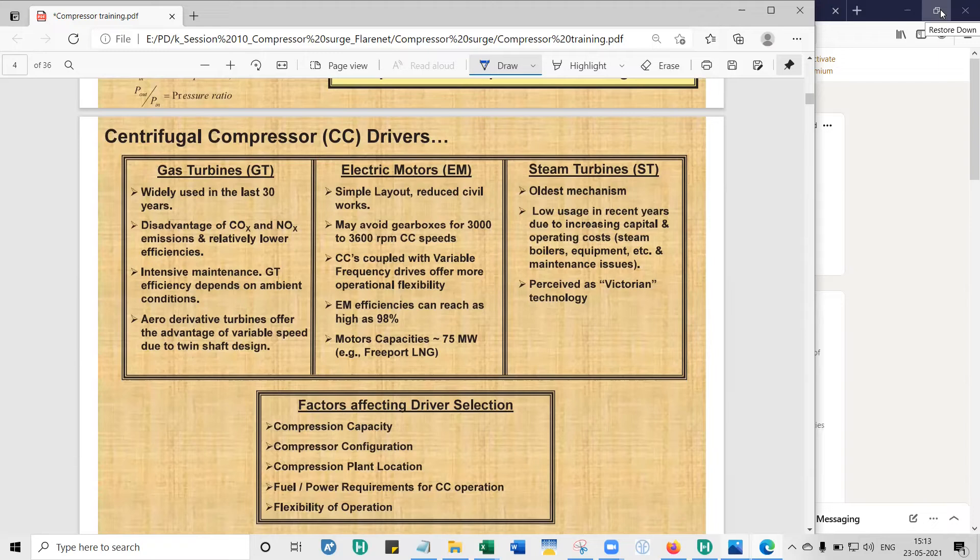The next thing is plant location. If you want to choose a driver, you have to also look into the source of the fuel to it. So if it is a power plant, the fuel is electricity. If it is a steam turbine, you need water. If it is a gas turbine, you can take the natural gas and burn it. Then, fuel or power requirements.